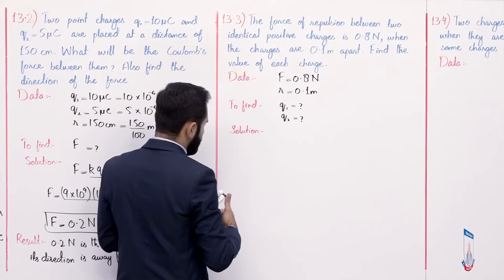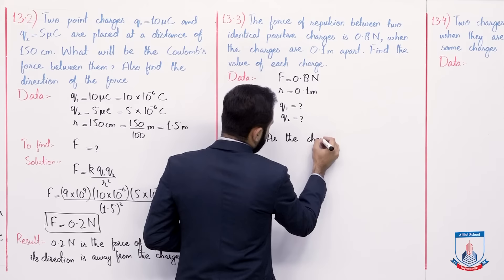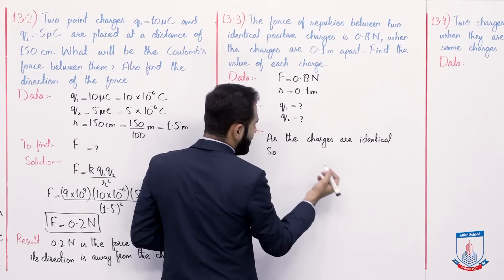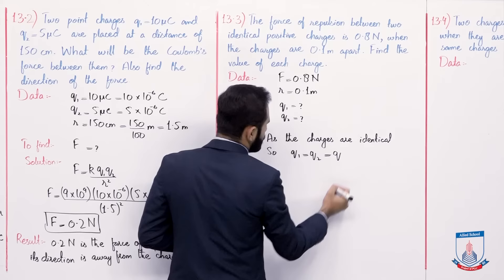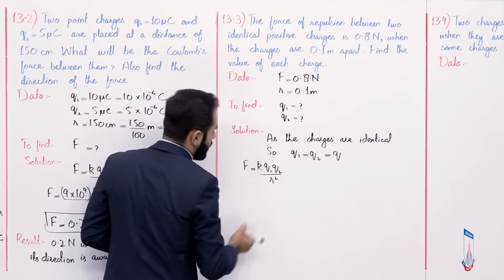As we know, the charges are identical, so as the charges are identical — identical mean that the charges are same — so we can say q1 is equal to q2 and that is equal to q. Now write the formula: f is equal to k q1 q2 divided by r square.